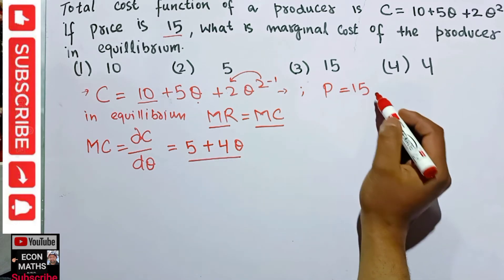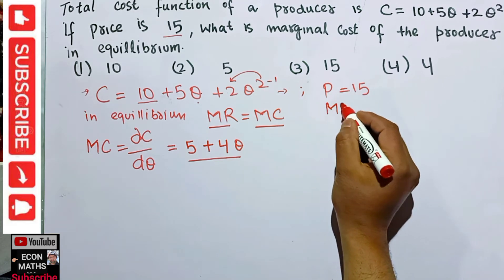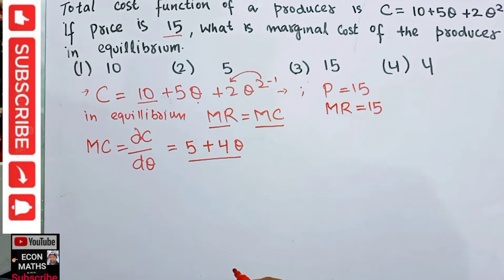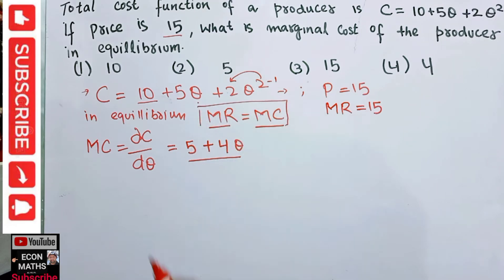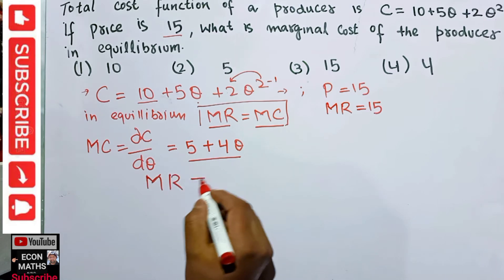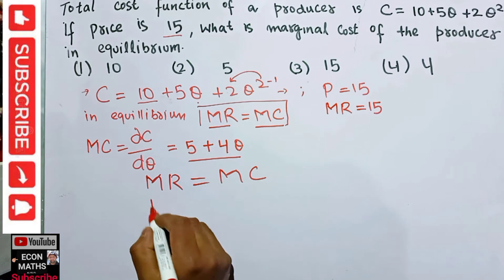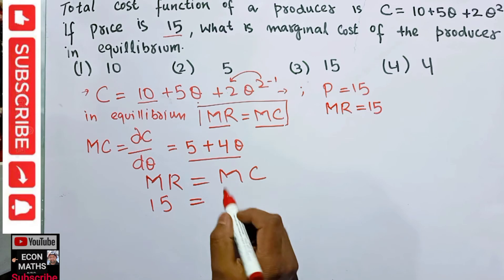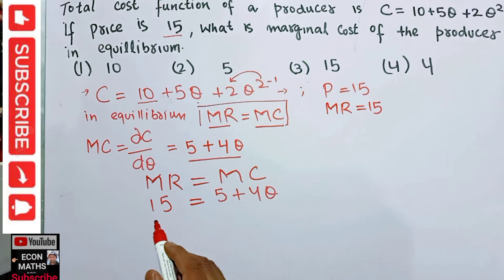Since price is equal to 15, our marginal revenue is also equal to 15. The equilibrium condition is marginal revenue = marginal cost, so we write: 15 = 5 + 4q, where 15 is our marginal revenue and 5 + 4q is our marginal cost.